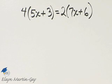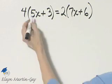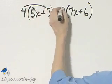Let's solve this equation for x and remember your steps for solving. Notice we do have parentheses in this equation, so let's use the distributive property to multiply.